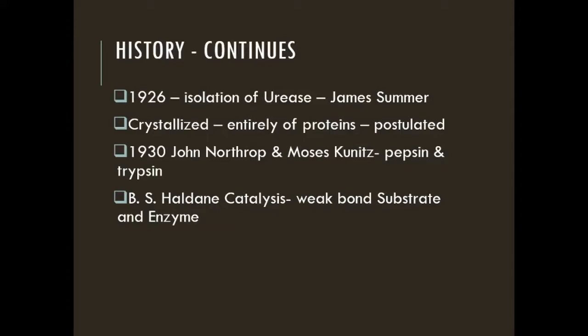The isolation and crystallization of urease by James Sumner in 1926 provided a breakthrough in early enzyme studies. Sumner found that urease crystals consisted entirely of protein. He postulated that all enzymes are proteins, since only proteins were found in the urease enzyme.